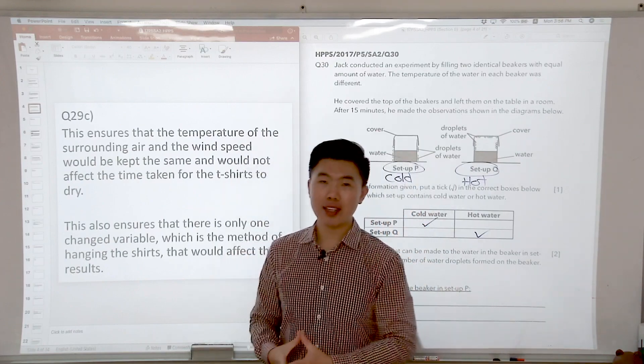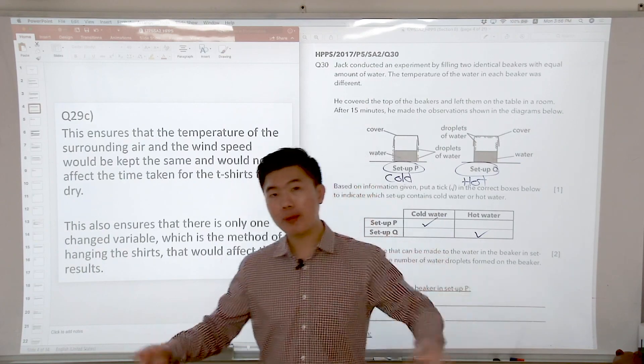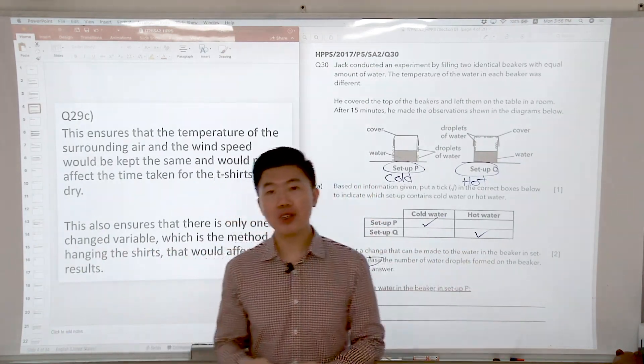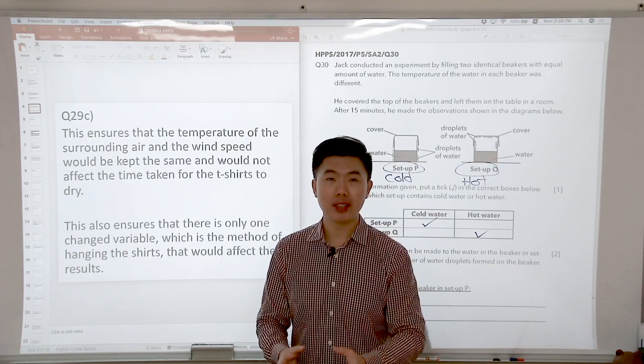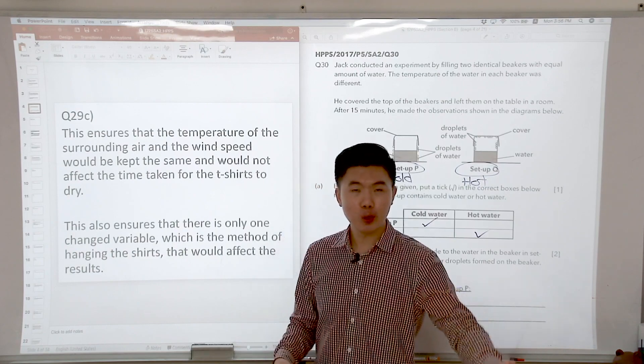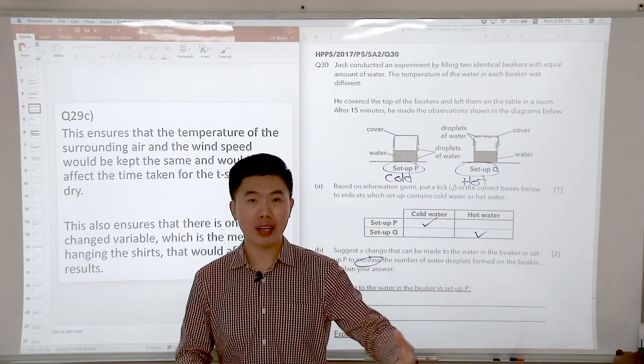The standard way of answering is that the warmer water vapor from the surrounding air comes into contact with the cooler outer surface of the beaker, loses heat to it and condenses to form tiny water droplets.